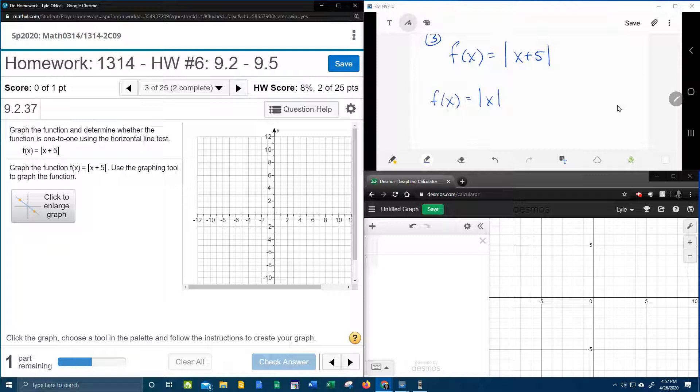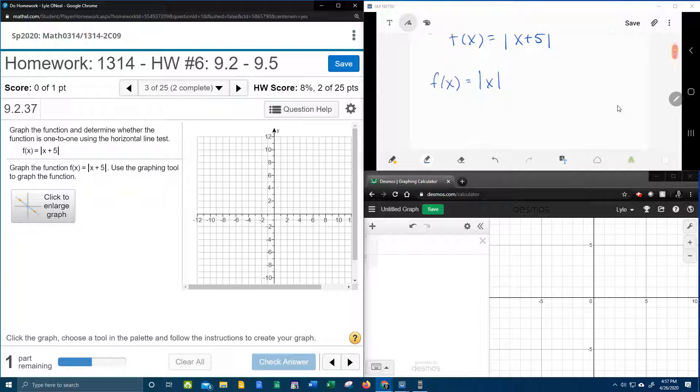Here the parent function would be f(x) equals just the absolute value of x, and that graph, remember that an absolute value always makes a v. So the parent function is going to be a v centered at the origin going up.